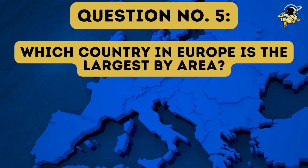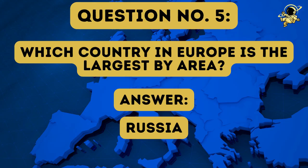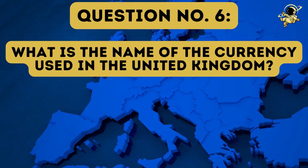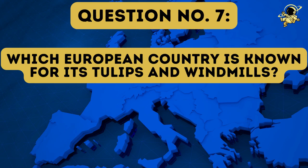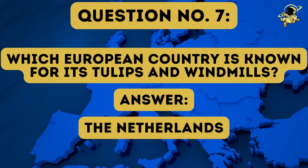And now we come to question number five: Which country in Europe is the largest by area? And the answer to question number five is Russia. I guess everybody would have thought that. Then we have question number six: What is the name of the currency used in the United Kingdom? And the answer to question number six is the Pound Sterling.